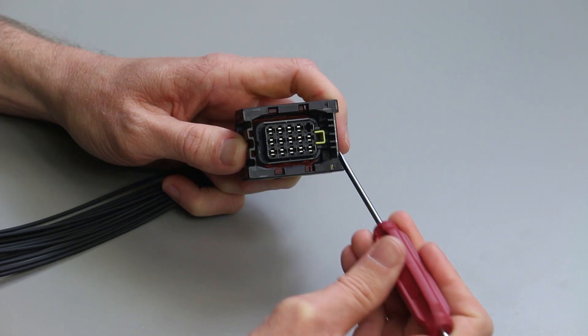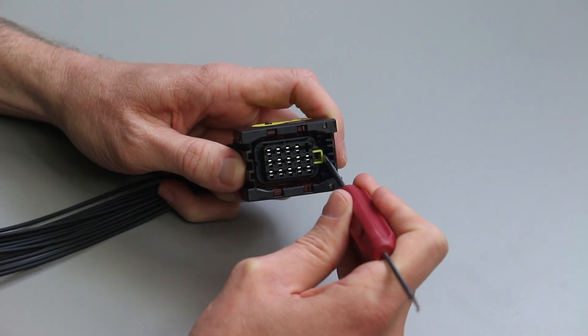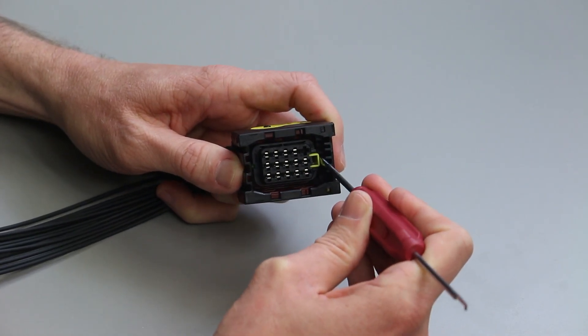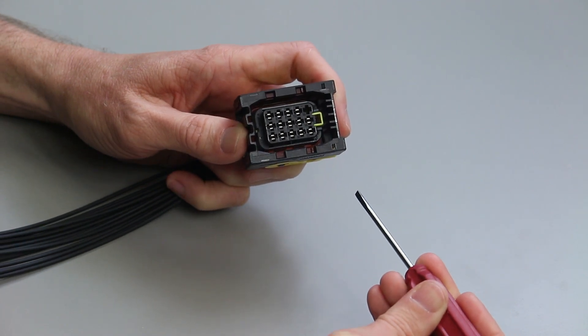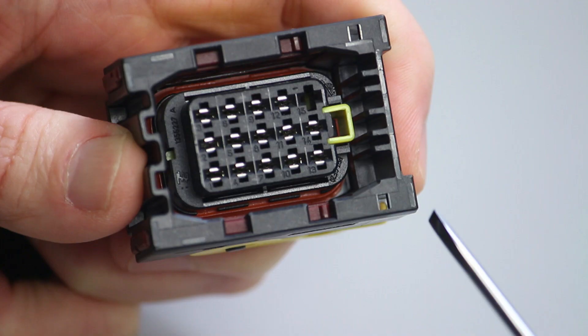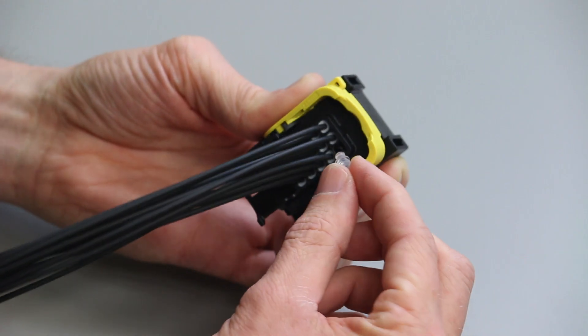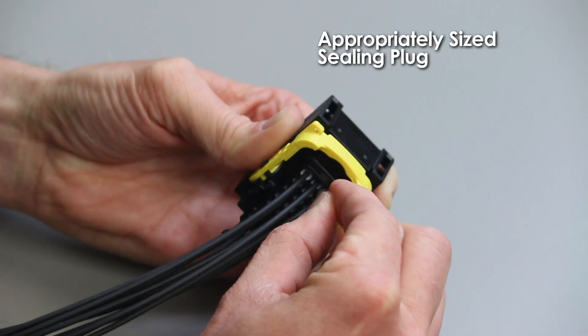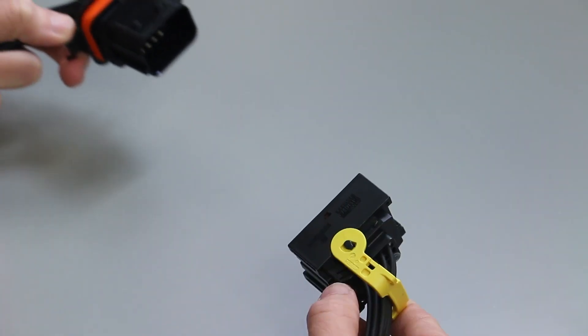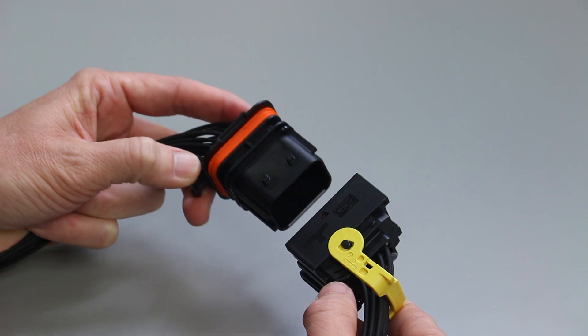After all the contacts have been inserted, slide the integrated secondary lock into the locked position with the DT-RT1 removal tool or a screwdriver. Please note that if you have open cavities, they will need to be filled with appropriately sized sealing plugs. Repeat this process for both connector halves.